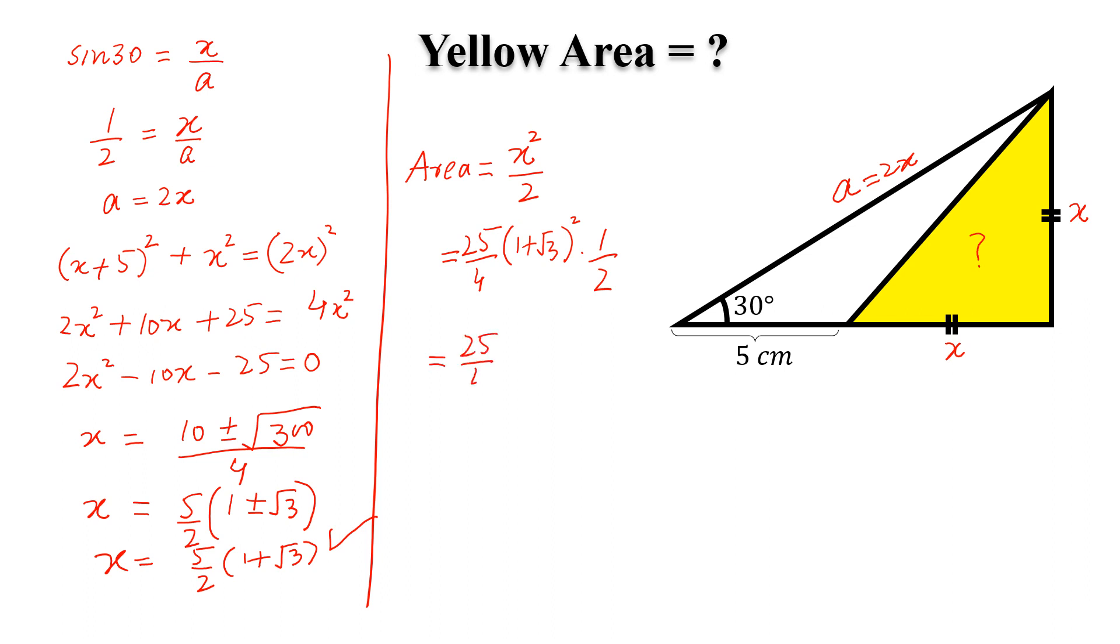So, (25/4)(1 + √3)², this is equal to (4 + 2√3) times 1/2.